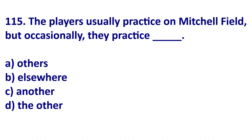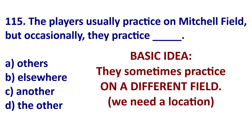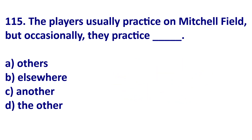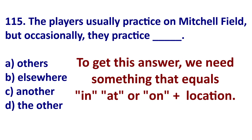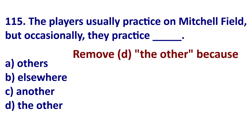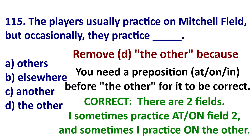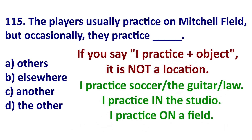Let's go to the next question. The basic idea is: they usually practice on Mitchell Field, but sometimes they practice at a different location. To get this answer, we need something that equals 'in, at, or on + noun' because we are talking about a location. Let's eliminate D for two reasons. First, you would need a preposition before 'the other' — sometimes I practice at field two and sometimes on the other field. If you say 'I practice object,' that's not a location. For location, you need in, at, or on.